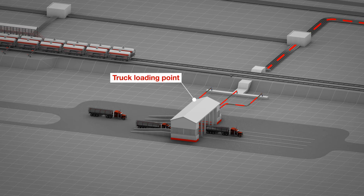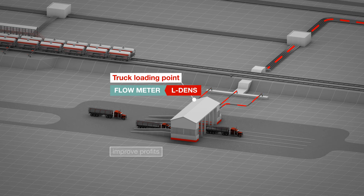A finished product such as gasoline is usually delivered from the storage tank to gas stations via trucks. At the truck's loading point, normally the product's volume is measured. With the upgrade of existing flow meters to mass flow measurement using Anton Paar's density sensor L-Dense, you can improve your profits. There are also legal regulations according to which deviations in the mass balance have to be kept within a certain limit.